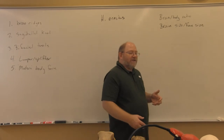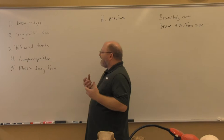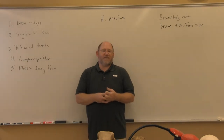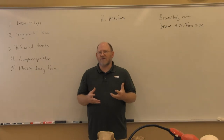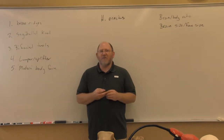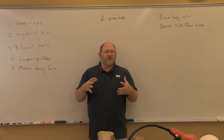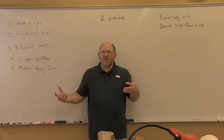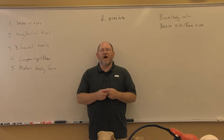Homo erectus first appeared in Africa, but it is the first of our ancestors to leave Africa. There's evidence of Homo erectus in the Arabian Peninsula right next door, dating to maybe 1.7 or 1.6 million years ago. So it was the first of our ancestors to leave, and it spread all throughout Asia and even got into Europe.